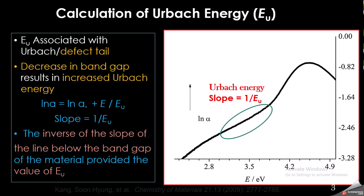How can we calculate the Urbach energy and how can it be related to doping in the material? It can be calculated using this formula: ln(α) = ln(α₀) + E / Eu, where we plot ln(α) on the y-axis and energy in electron volts on the x-axis.